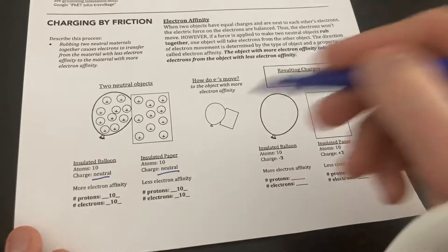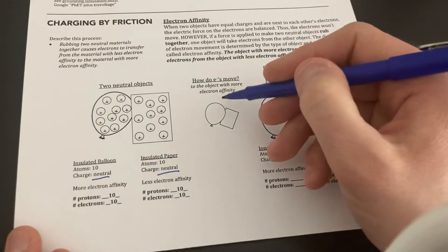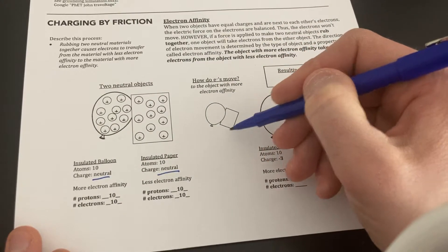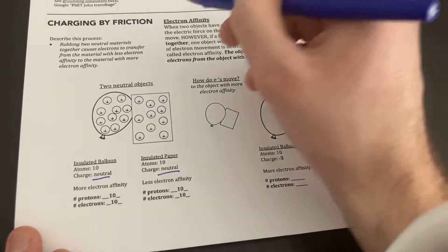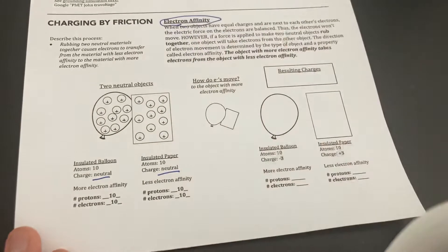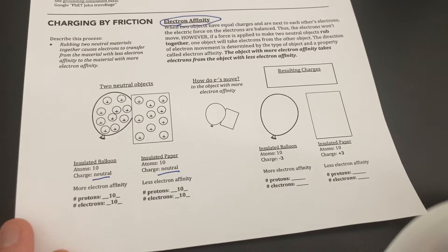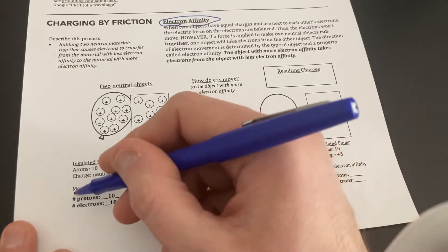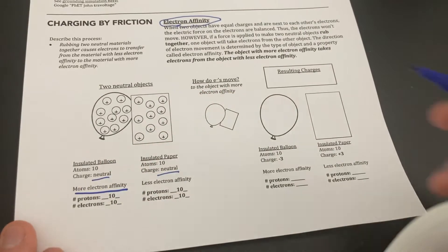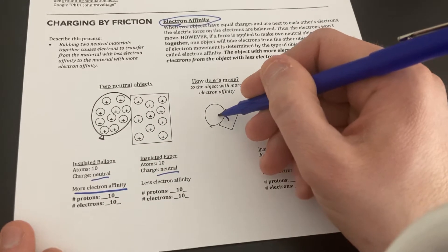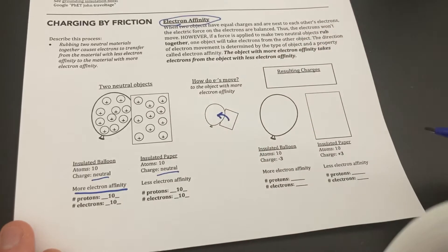Now when that happens, electrons are going to jump from one object to the next. Now the question is, do they go from the balloon to the paper or the paper to the balloon? All right, in that case it all has to do with electron affinity. And electron affinity is just essentially saying like how much an object wants electrons. So the object with more electron affinity always gets the electron. So if that's the case, electrons are going to go hop over from the paper to the balloon.